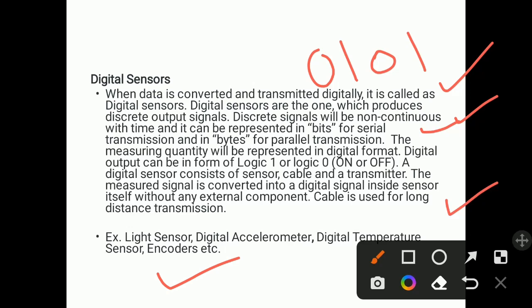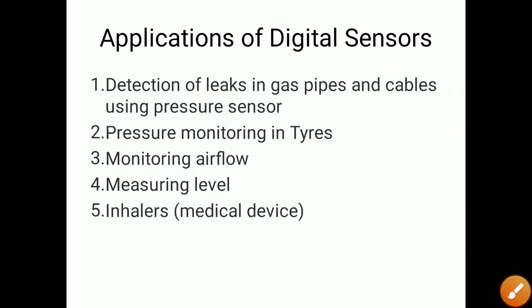Examples of digital sensors include light sensors, digital accelerometers, digital temperature sensors, and encoders. Applications of digital sensors include detection of leaks in gas pipes using pressure sensors, pressure monitoring in tires, monitoring airflow, measuring level, and use in medical inhalers. When we want to monitor parameters with a computer, we need digital signals — that's why digital sensors are used, giving output in digital form.